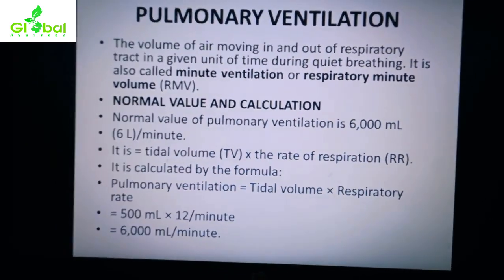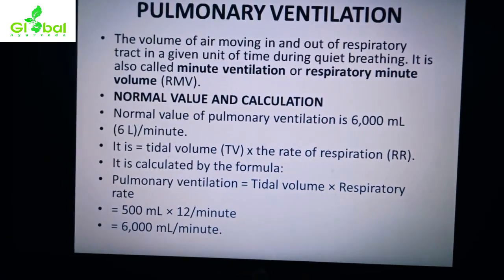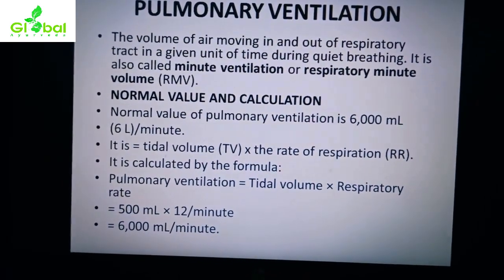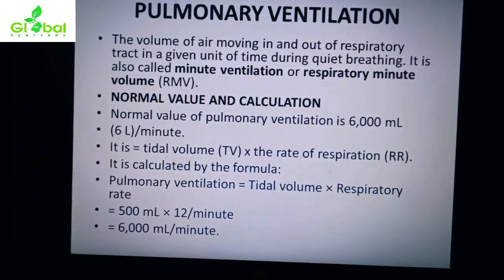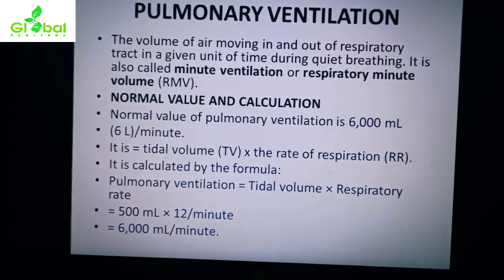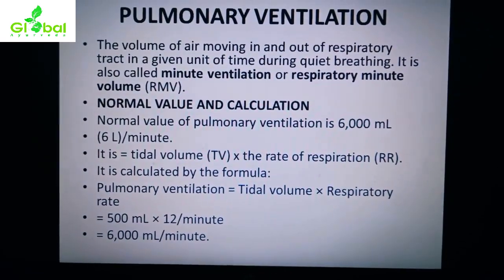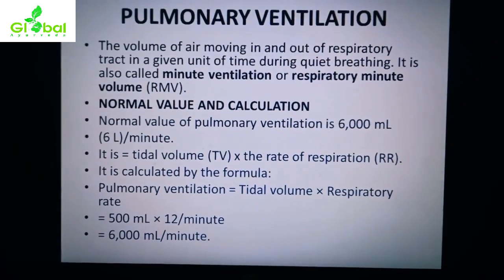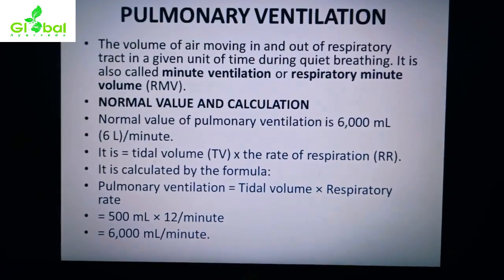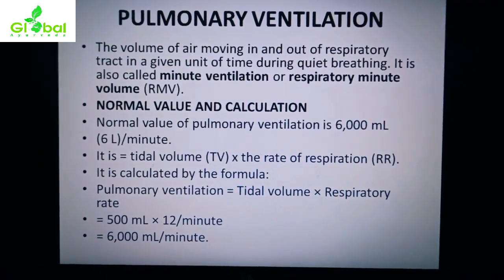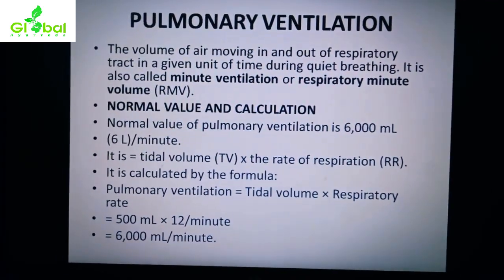Pulmonary ventilation is calculated by the formula: Pulmonary Ventilation = Tidal Volume × Respiratory Rate. Tidal volume is 500 ml, and during quiet breathing the respiratory rate is generally 12 respirations per minute. Multiplying these gives us the pulmonary ventilation value.